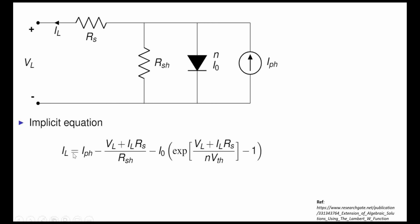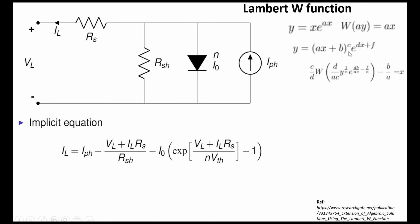To exactly solve this, we use the Lambert W function. The Lambert W function is defined as: if y = x·e^(ax), then x = W(a·y). More generally, for y = ax + b raised to power c times e^(dx+f), x can be written using the Lambert W function as x = (c/d)·W(...). Using this, our transcendental equation can be rewritten.